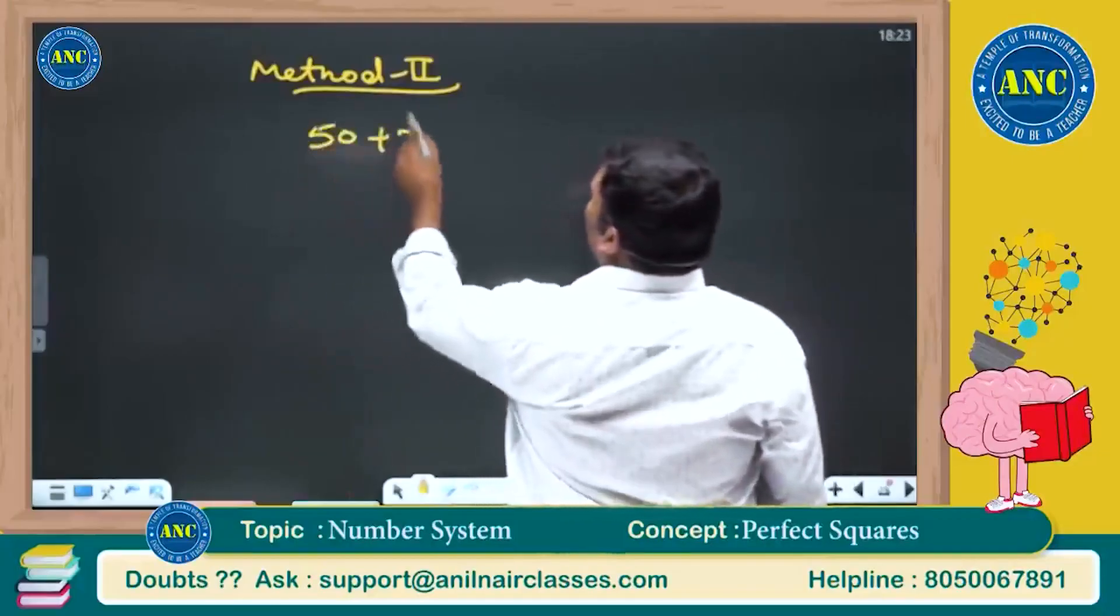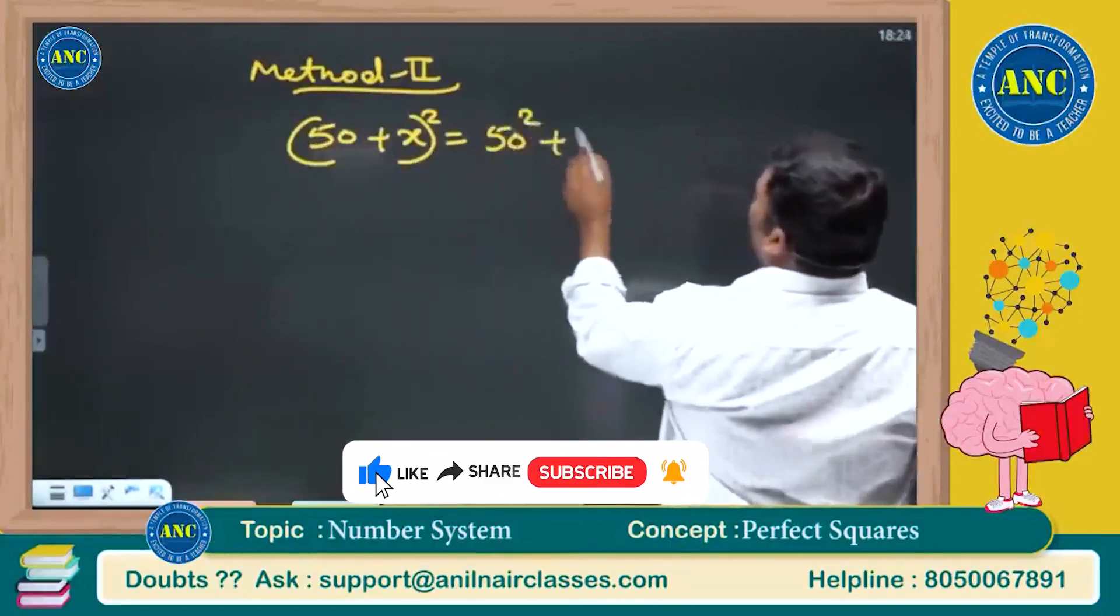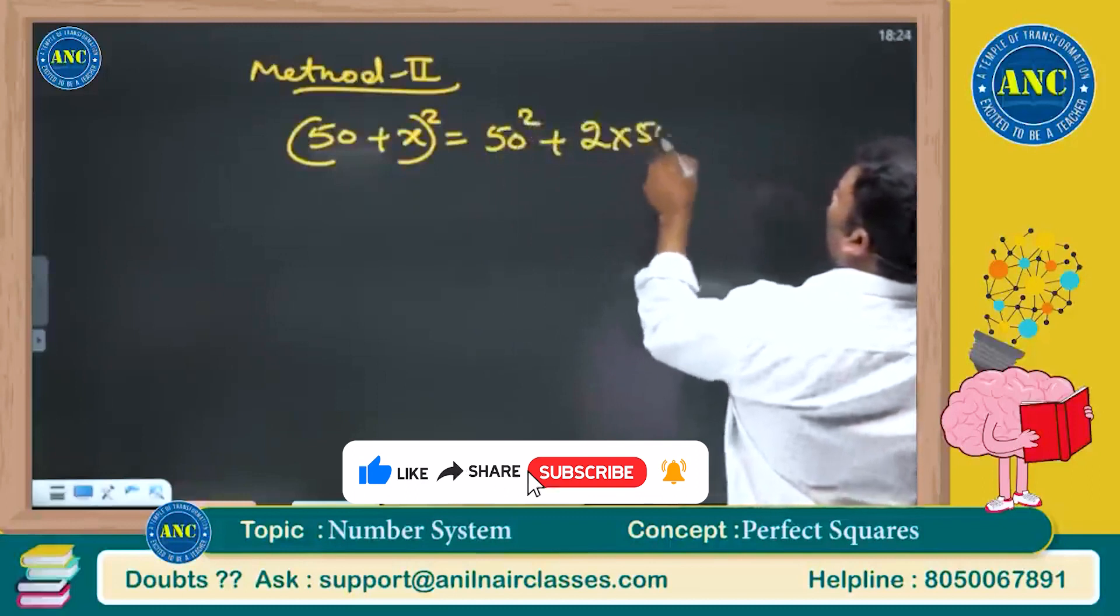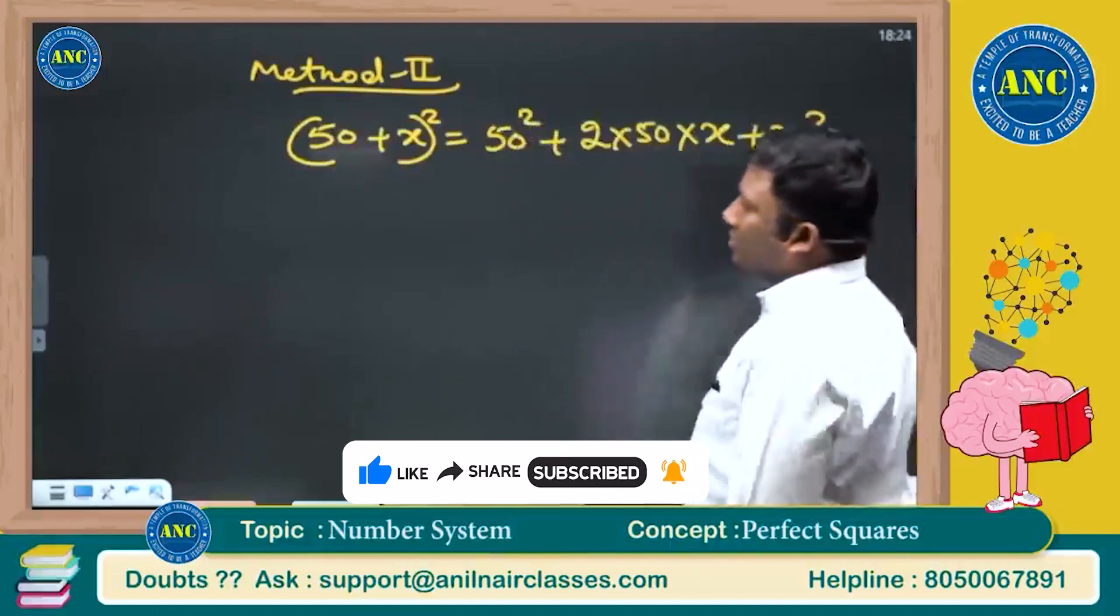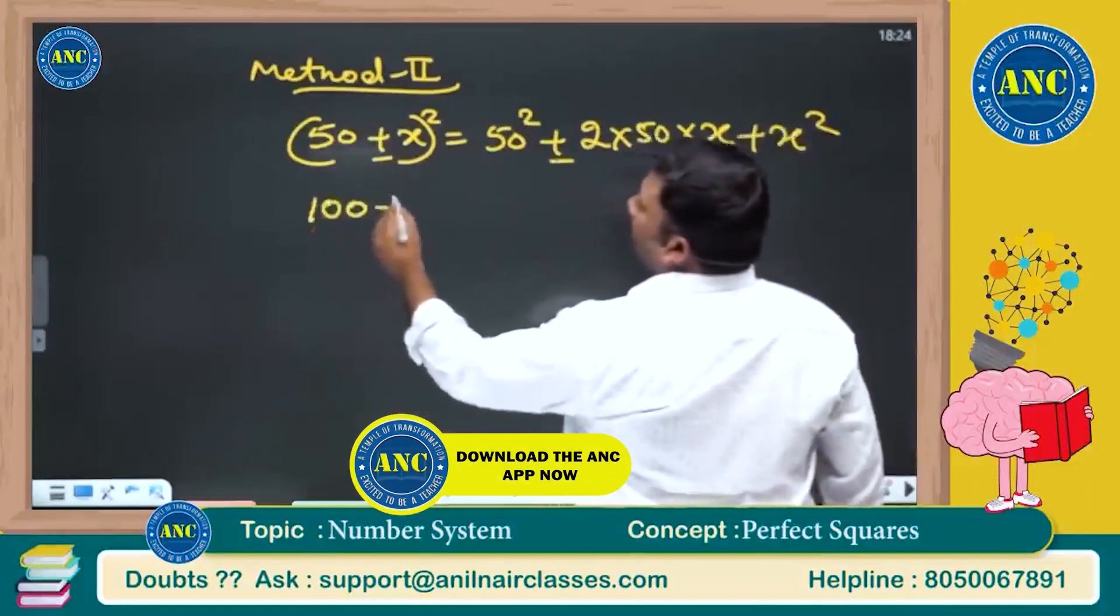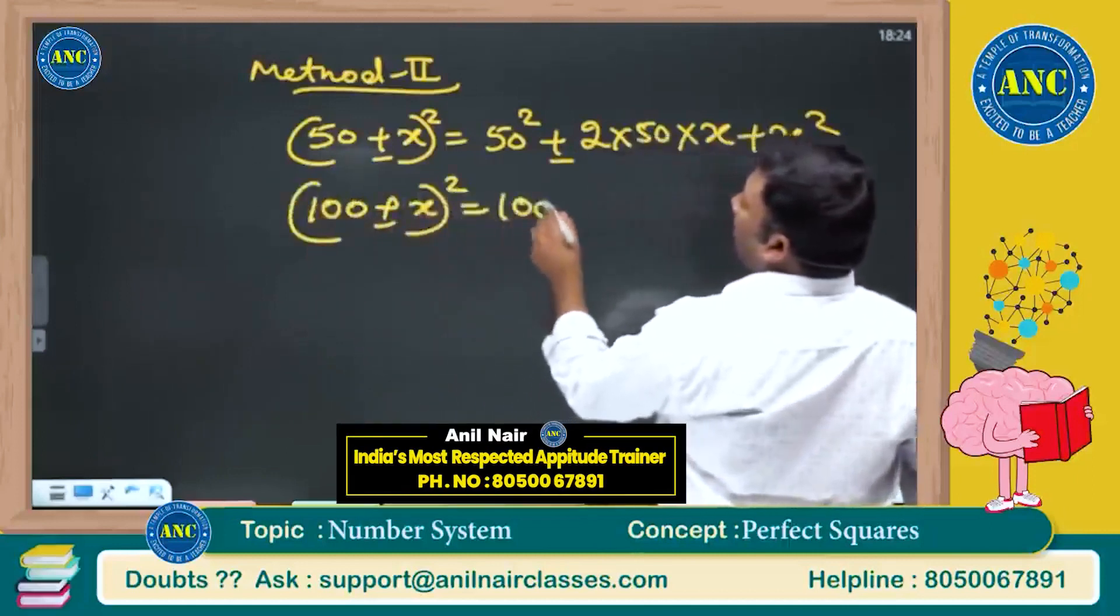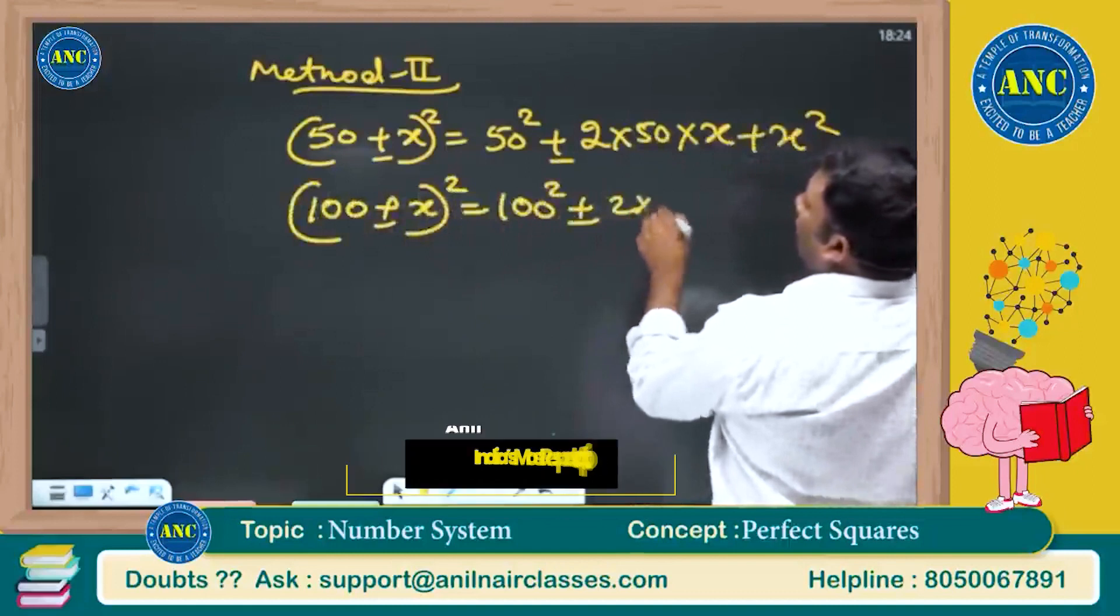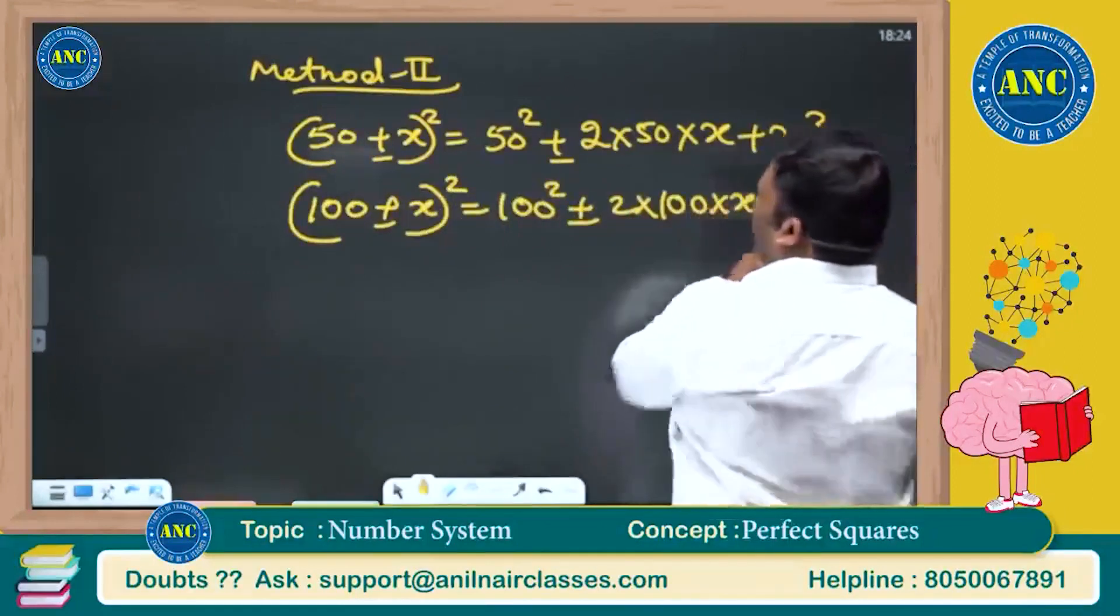50 plus x whole square. If I open this bracket: 50 square, 2 into 50 into x, plus x square. If I take minus, this will be minus 100 plus or minus x whole square: 100 square plus or minus 2 into 100 into x plus x square.